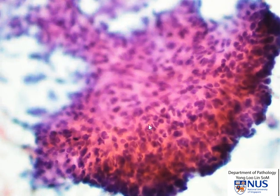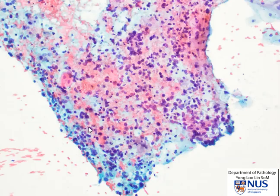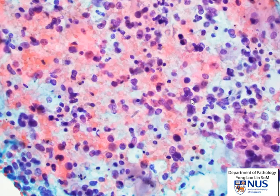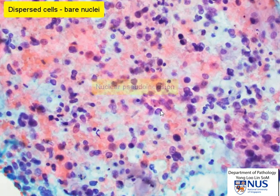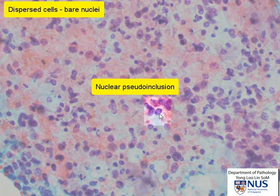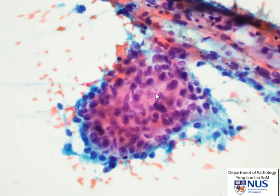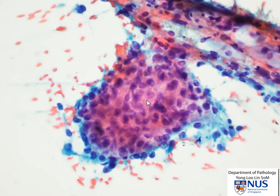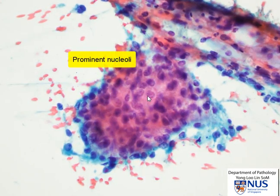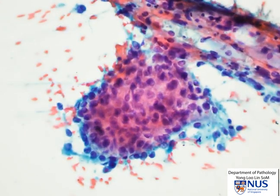We're looking for mitotic figures — so far not really seeing any obvious mitosis. Here is an area where the cells are less crowded. What we are seeing is a more dispersed cell pattern, mostly composed of naked nuclei or bare nuclei. There are a couple of nuclei with pseudo-inclusions here. At very high magnification, many of the nuclei are actually quite round, and if we focus on different planes, we can make out that some of them have prominent nucleoli. The cytoplasm ranges from scant to moderate, and it's quite delicate.